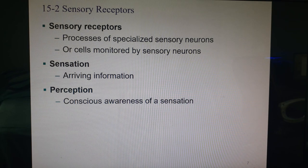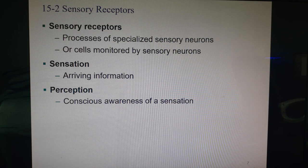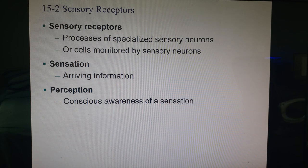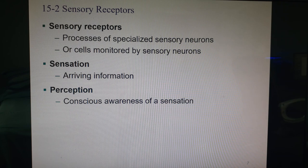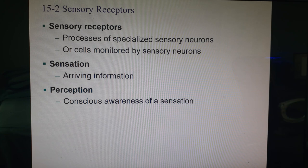Receptors are either entire cells or specialized dendritic endings on neurons. There's a difference between sensation and perception. Since the entire nervous system can only deal in electrical currents and action potentials, sensation is simply the pattern of action potentials arriving from a particular receptor into the central nervous system. It looks at things like how fast they're coming, how close together — giving us information about which receptor was stimulated, how fast, and how long.